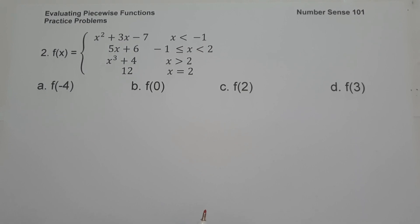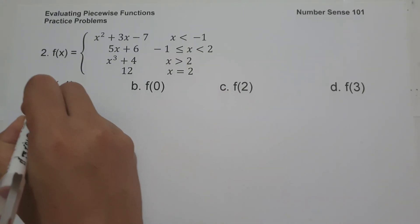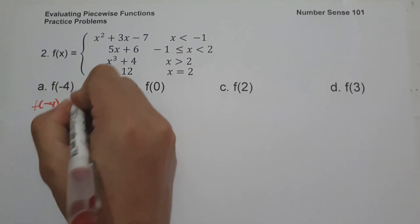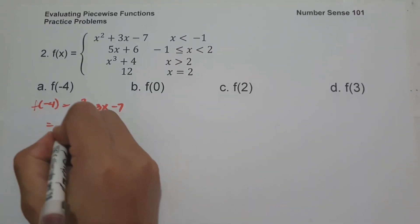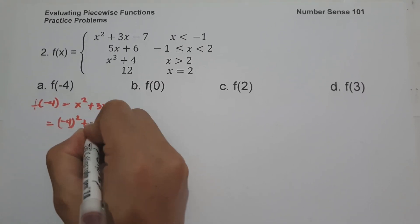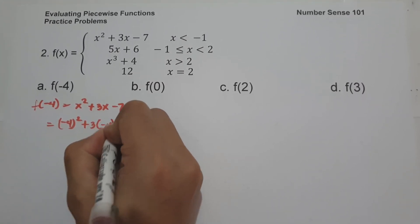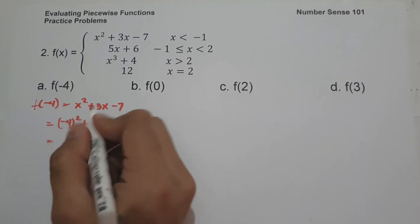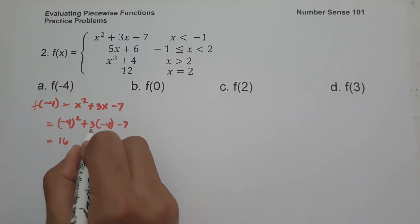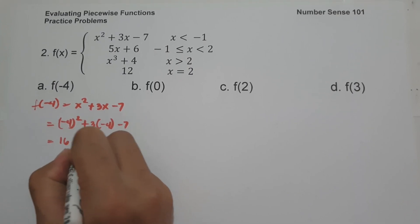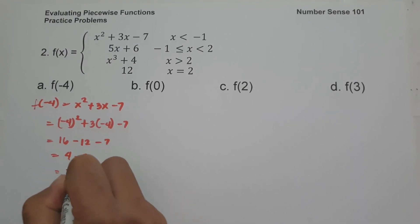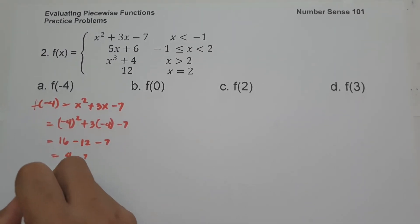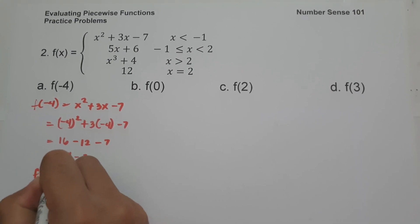On letter A, to find the value of f of negative 4, since negative 4 is less than negative 1, we are going to use x squared plus 3x minus 7. So this will be negative 4 raised to 2, plus 3 times negative 4, minus 7. Negative 4 squared is positive 16. 3 times negative 4 is negative 12. So 16 minus 12 is 4, minus 7, that's negative 3. So this will be the value of f of negative 4.